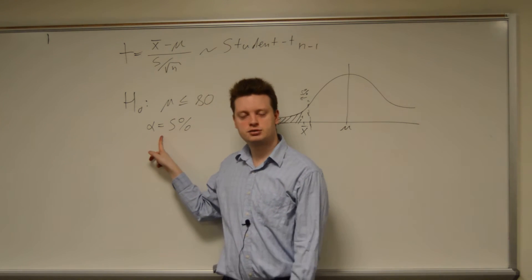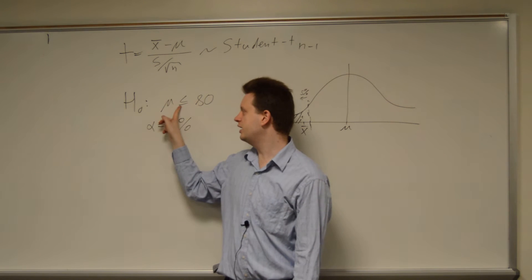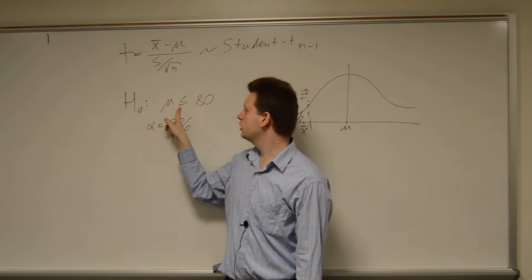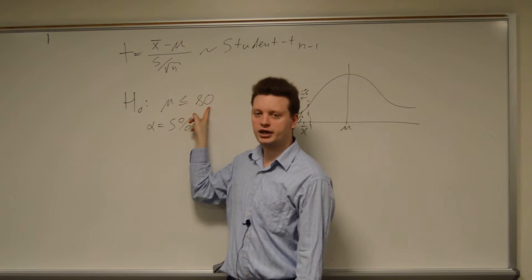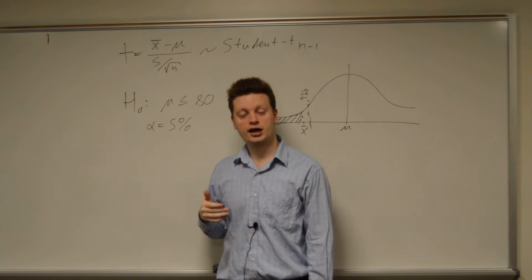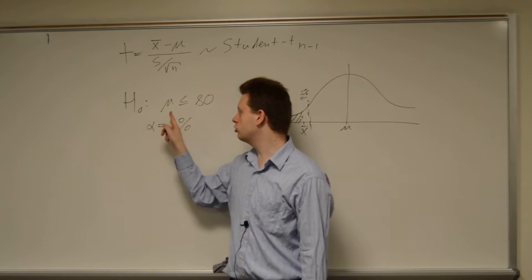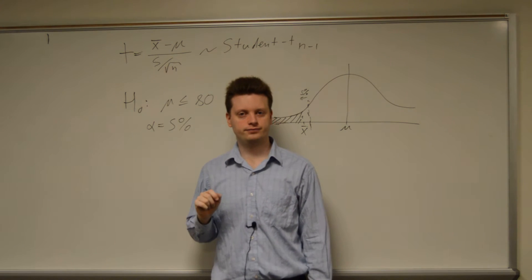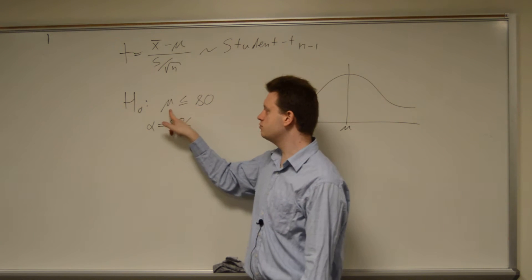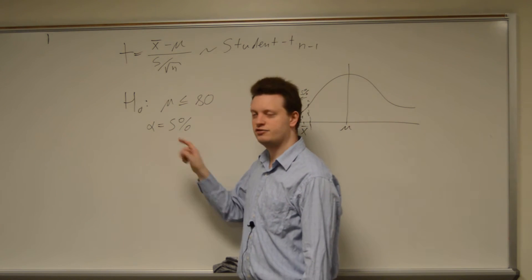If these 5% is my threshold here, I would reject this hypothesis and state that, no, mu is not less than or equal to 80, but the alternative hypothesis mu is strictly greater than 80 has to be true. I could also do it with mu being equal to 80 or mu being greater than 80. So let's make a nice example, and I will use exactly this mu less than or equal to 80 and alpha equals 5%.